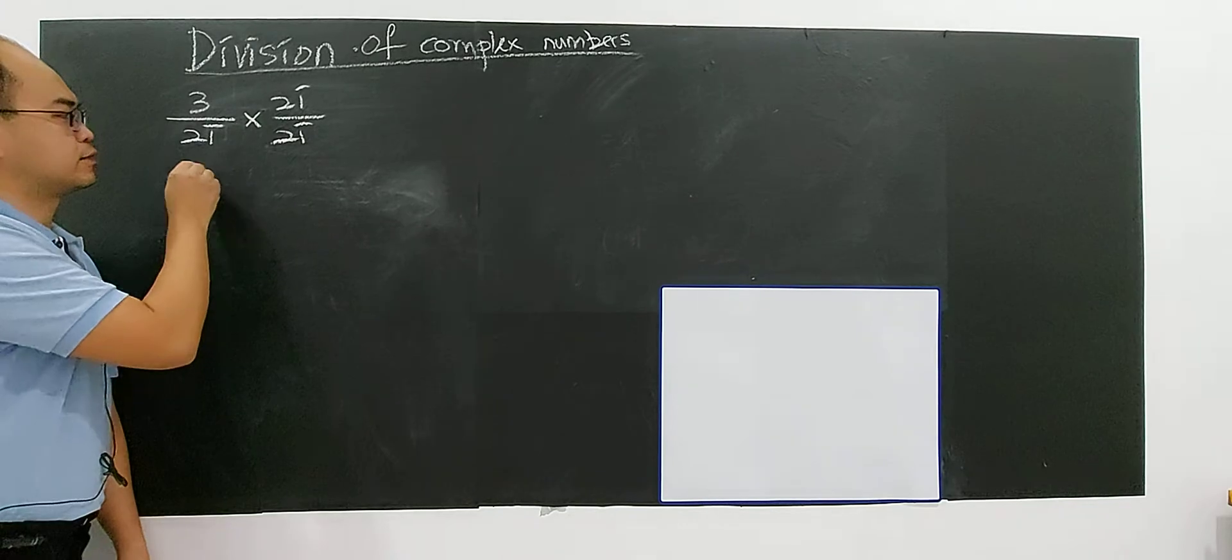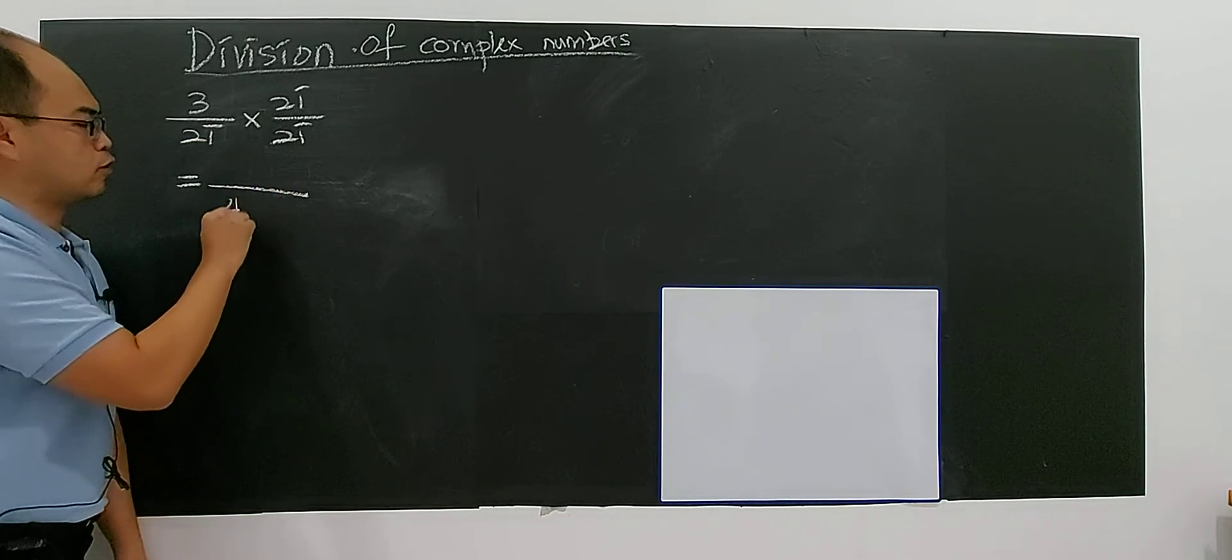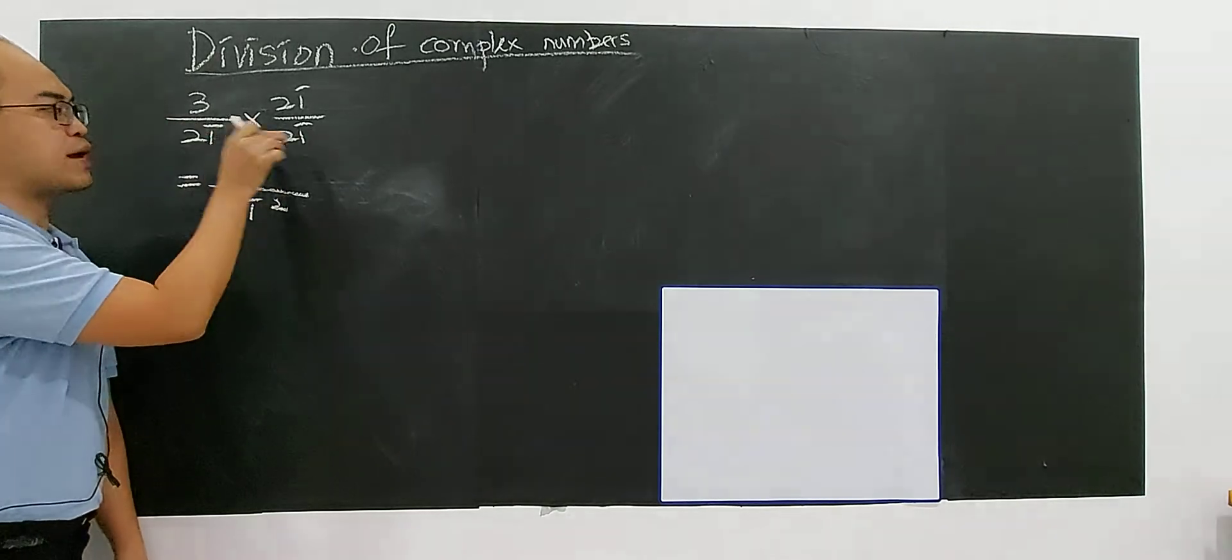Identical, alright. So you will get - you see - so 2 times 2 is 4, i times i is i squared, because two imaginary multiply.